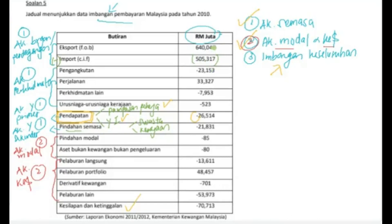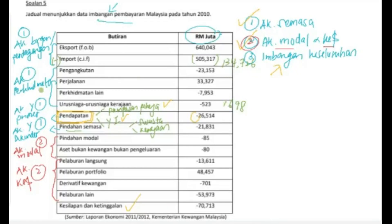Eksport tolak import — berapa jawapan yang anda dapat? 134,726 RM juta. Amount ini merujuk amount bagi akaun barangan atau perdagangan. Selain daripada akaun perdagangan, kita juga ada perkhidmatan. Sila jumlahkan komponen-komponennya — akaun perkhidmatan sama dengan 1,698 RM juta. Ini adalah amount bagi akaun perkhidmatan.